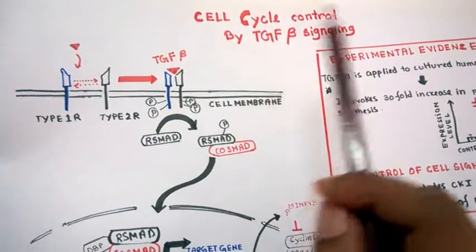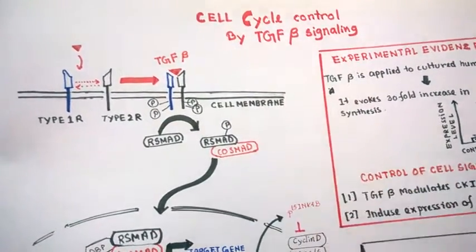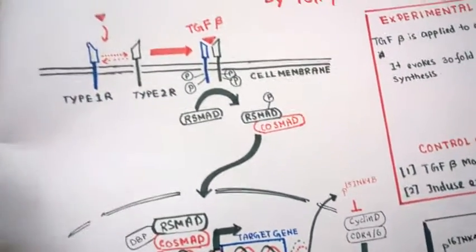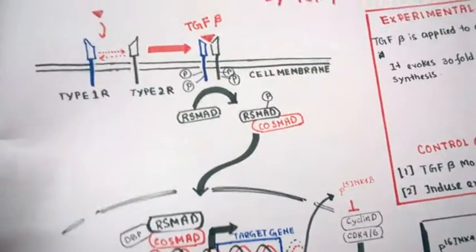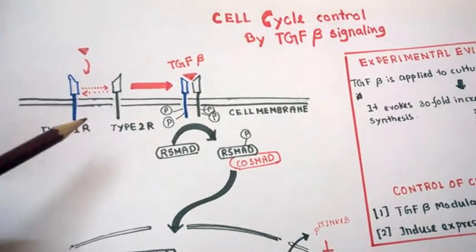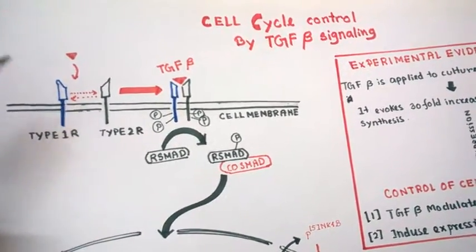In this video I'm going to talk about cell cycle control by TGF beta signaling. TGF beta signaling is very important for cell cycle control and starts with the ligand, the transforming growth factor beta.